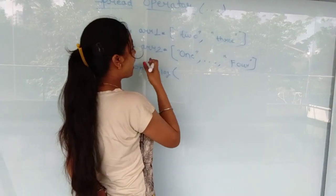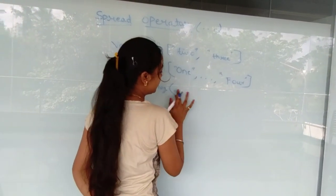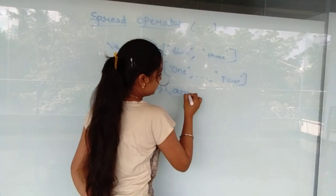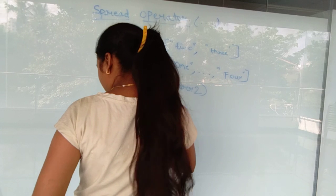So we write console.log. Now we want to see the output of variable array two, so we will write here array two. We want to see the output of array two using console.log.